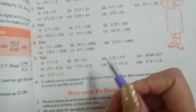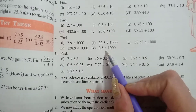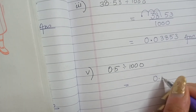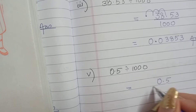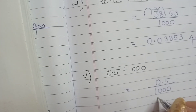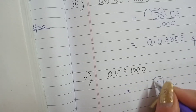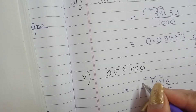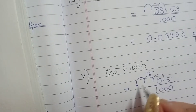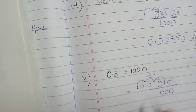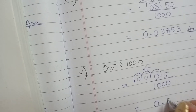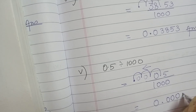Let us move ahead with another part, which is the fifth part: 0.5 divided by 1000. Same step — first step: write 0.5 upon 1000. Number of jumps: 3. Which side? Left side. 1 jump, 2 jump, 3 jump. The decimal has come here. Now empty spaces are 2, so we will write 0. The answer is 0.0005.